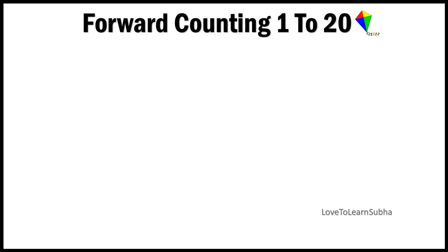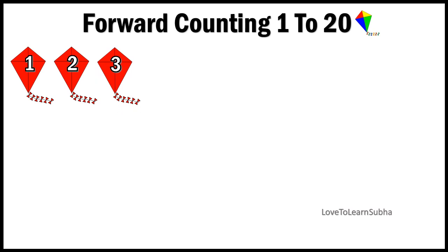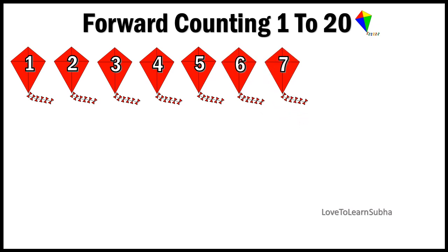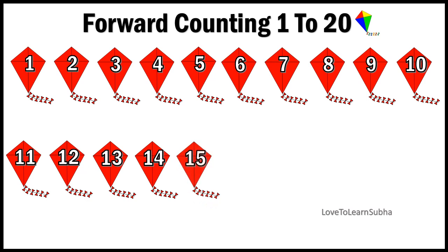Now let us do the forward counting from 1 to 20 by counting the number of kites. 1, 2, 3, 4, 5, 6, 7, 8, 9, 10, 11, 12, 13, 14, 15, 16.